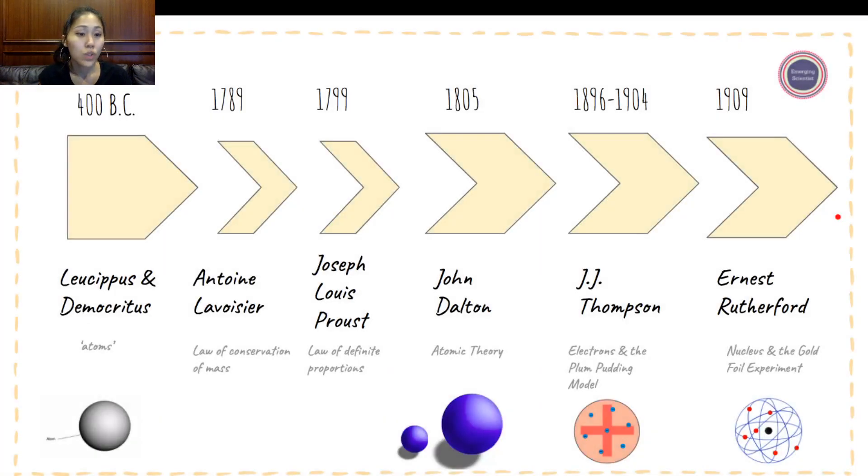We're going to start with 400 BC looking at Leucippus and Democritus, then move forward in time to 1789 looking at Antoine Lavoisier, then 1799 Joseph Louis Proust, 1805 John Dalton, 1896 to 1904 J.J. Thompson, and last but not least Ernest Rutherford in 1909.